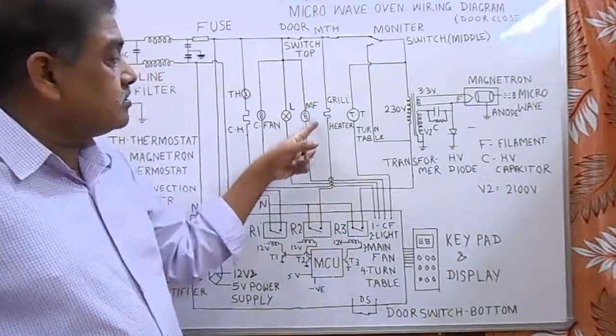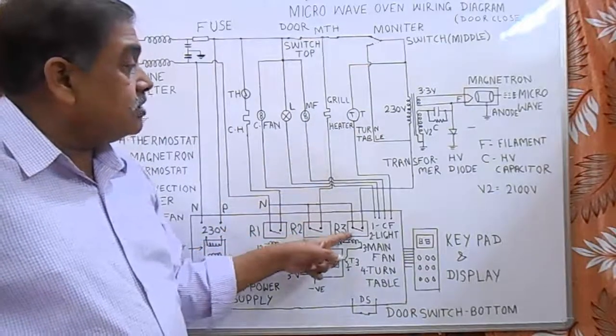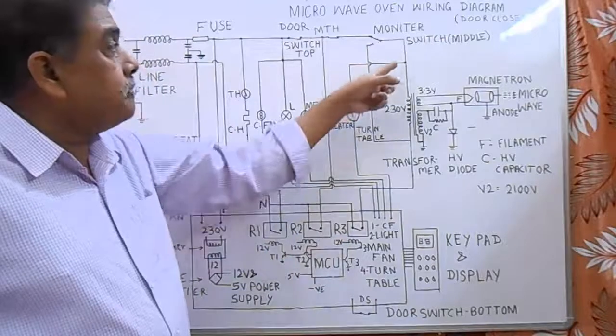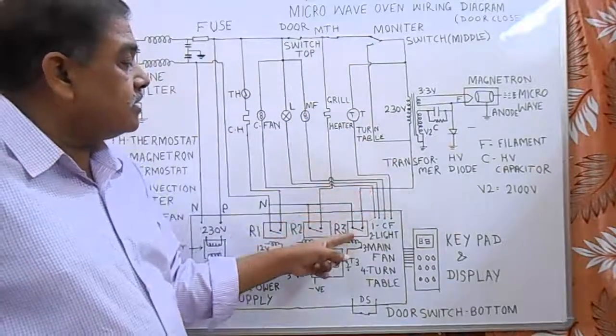The grill unit is connected to relay R2. For the microwave unit, the neutral is connected to relay R3.